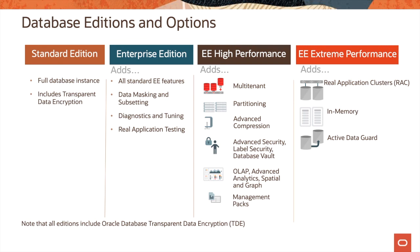From Enterprise Edition, as you move to the Enterprise Edition High Performance Package, you get all the features of Enterprise Edition plus the multi-tenant option (available in database 12c and higher), partitioning, advanced compression, advanced security, label security, database vault, OLAP, advanced analytics, spatial and graph, and the remaining management packs for Enterprise Manager.